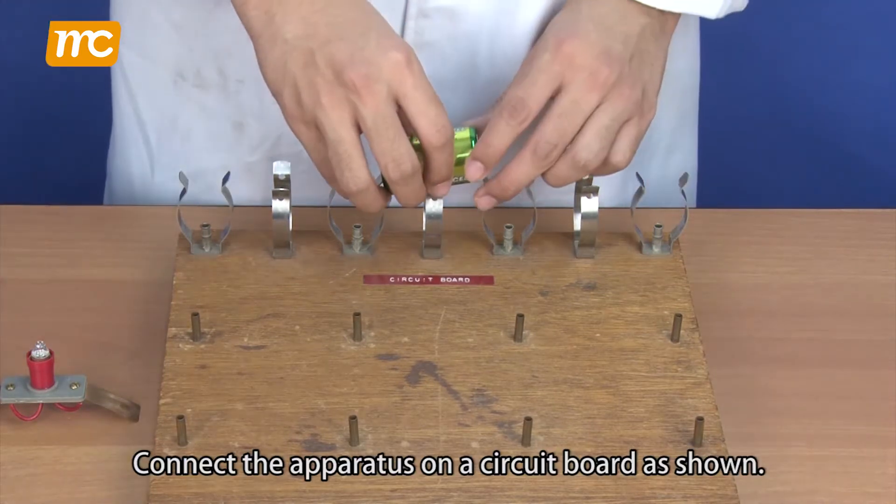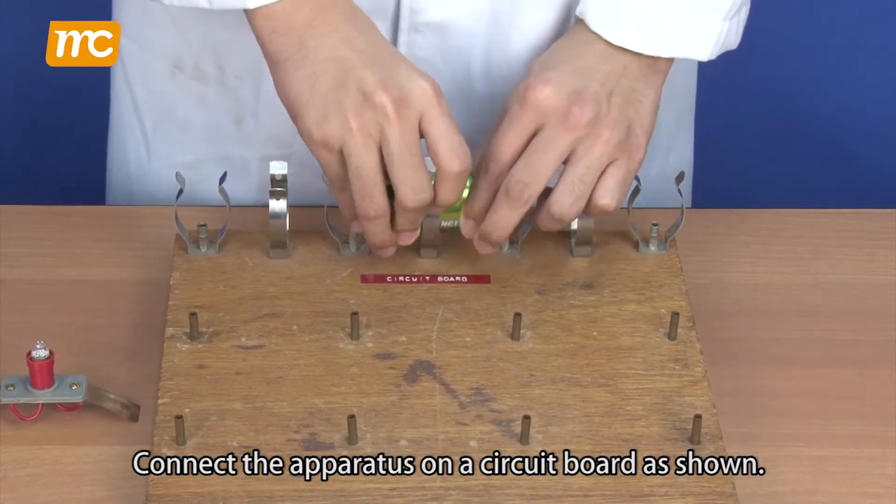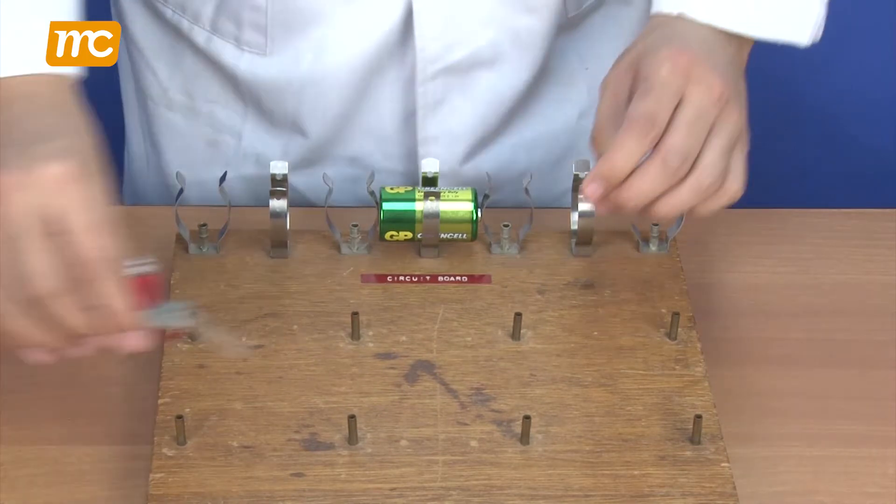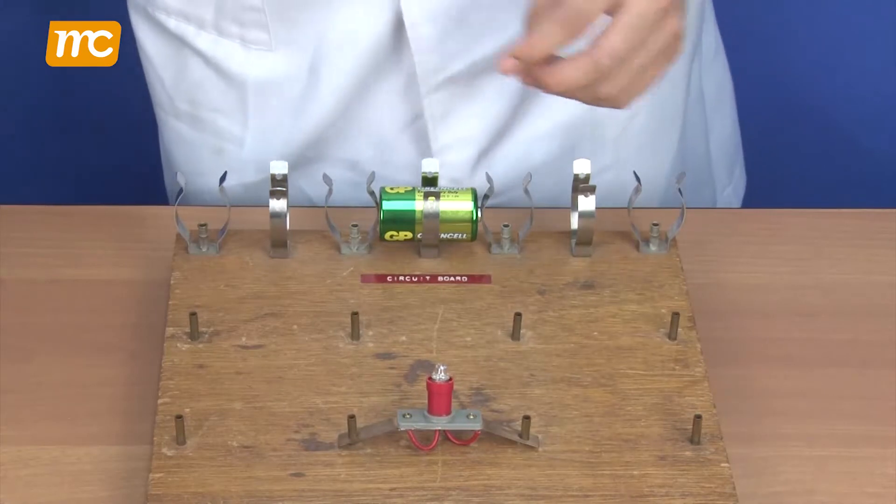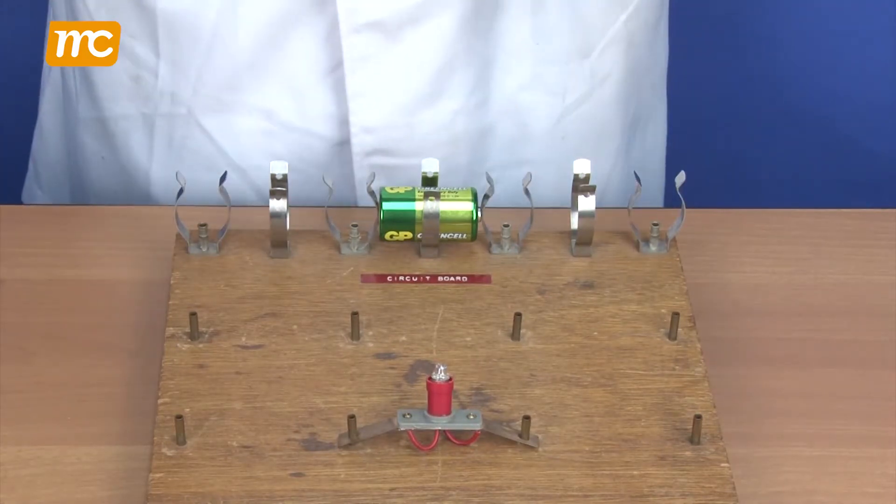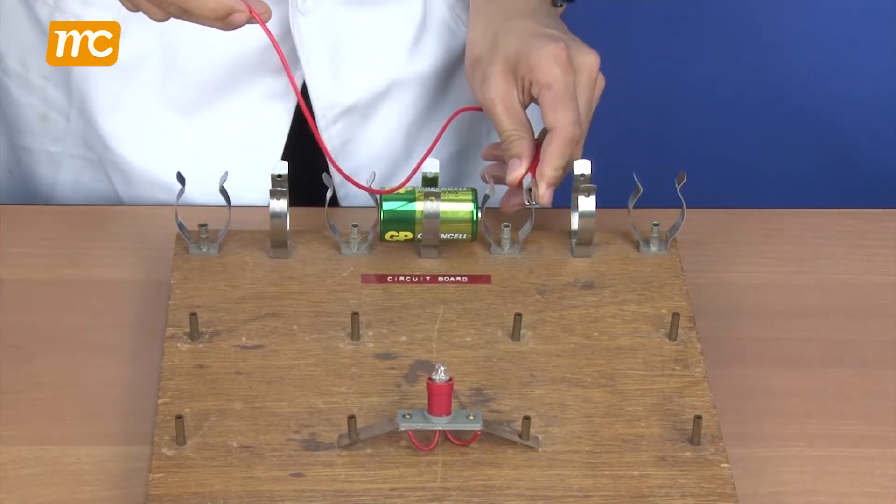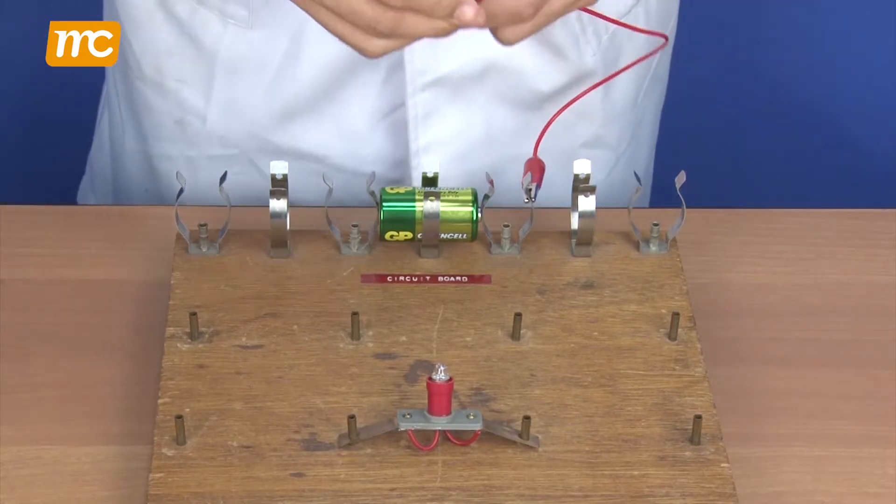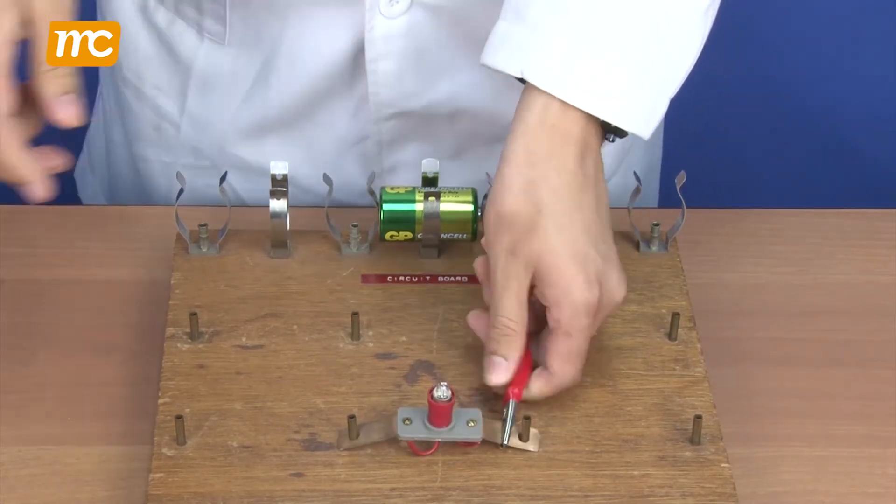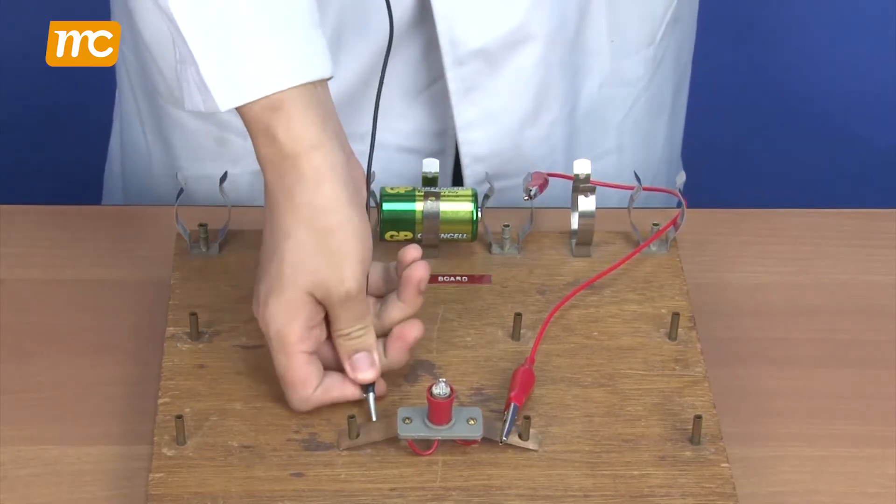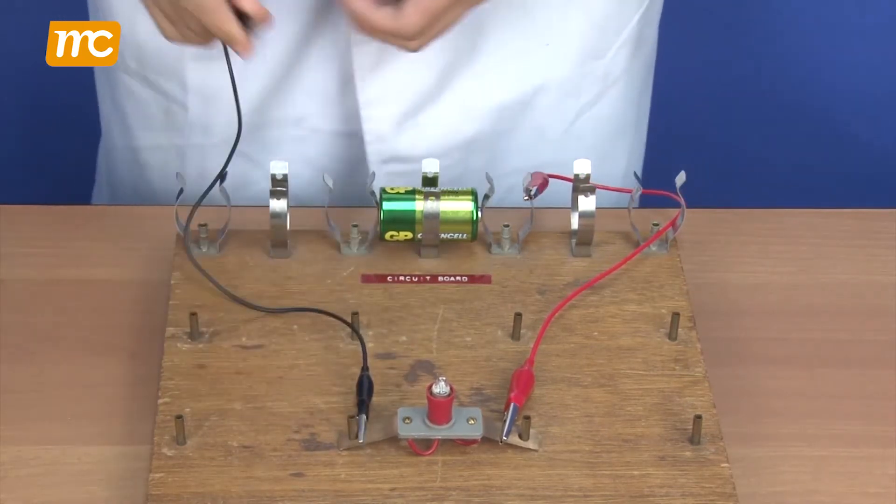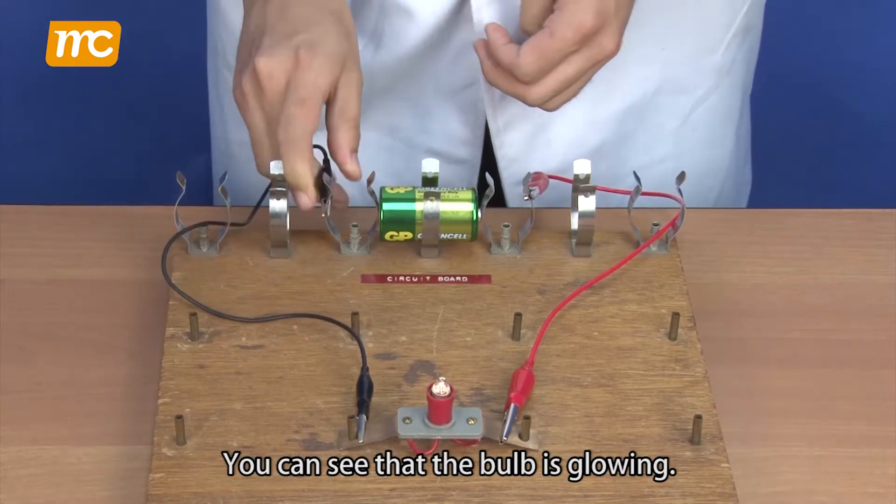Connect the apparatus on a circuit board as shown. You can see that the bulb is glowing.